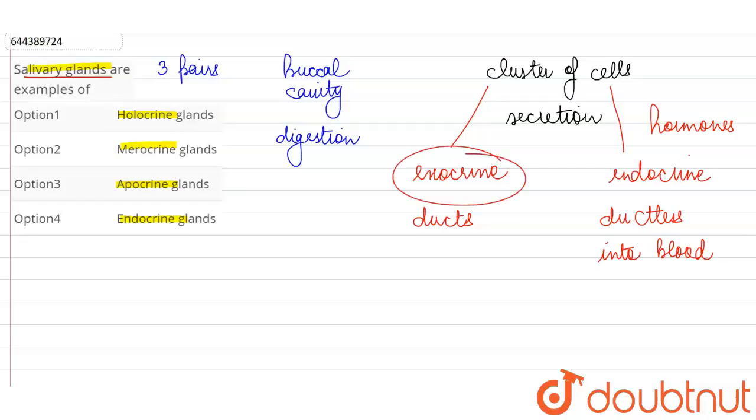Exocrine glands are further divided into three main categories on the basis of how they are putting their secretion into the duct.